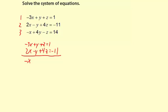z plus 4z makes plus 5z, and 1 plus negative 11 is negative 10. This is our first equation for solving with only two variables, x and z.